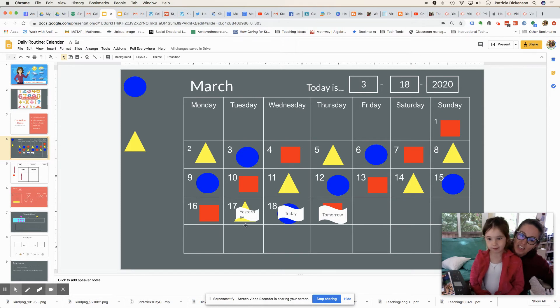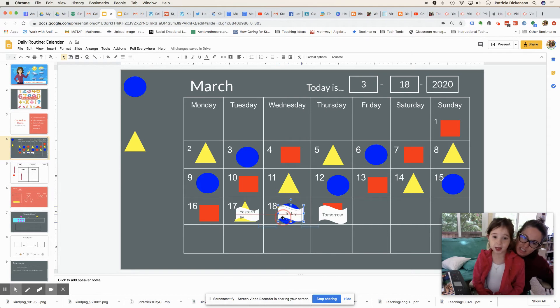Excellent, and so today's the 18th, and what shape is underneath there? So yesterday was the 17th, yellow triangle, and tomorrow will be the red rectangle. Okay, let's move on.